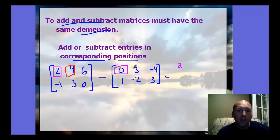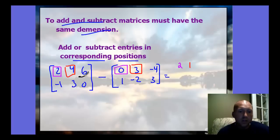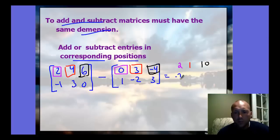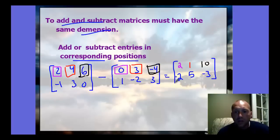Continuing through corresponding positions: 6 minus negative 4 equals 10 — be careful with signs. For the second row: negative 1 minus 1 is negative 2; 3 minus negative 2 is 5; and 0 minus 3 is negative 3. The result is another 2 by 3 matrix.